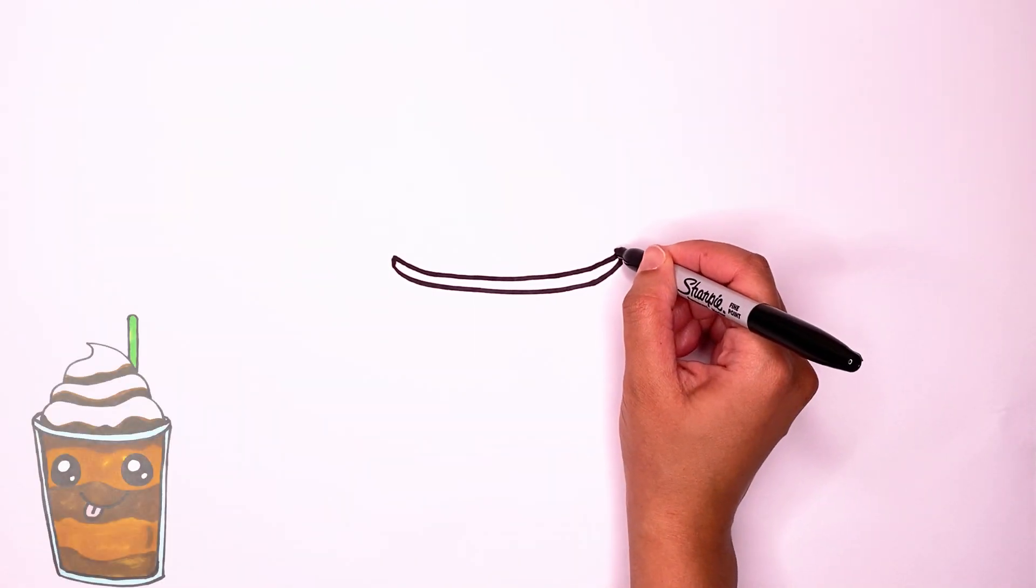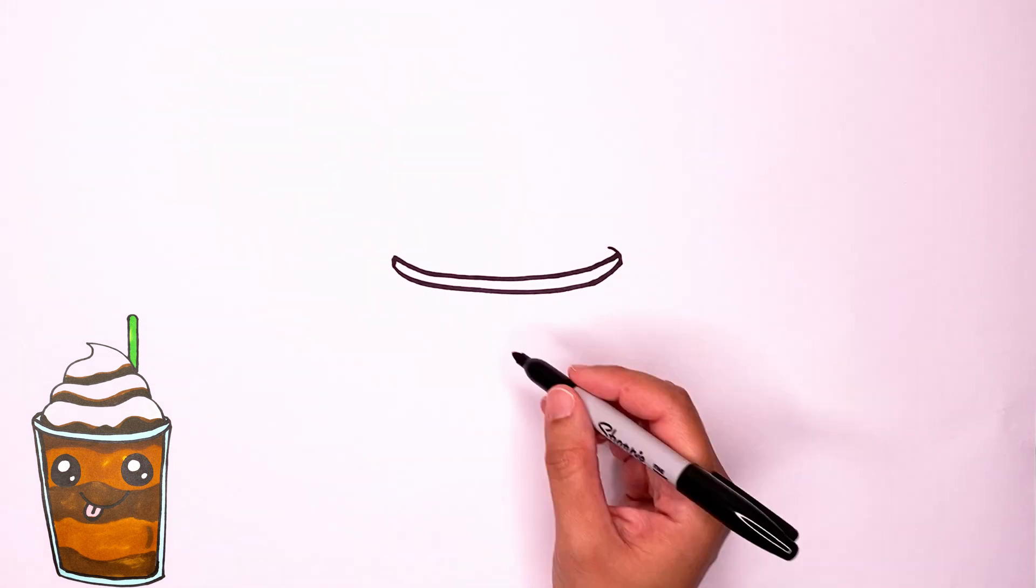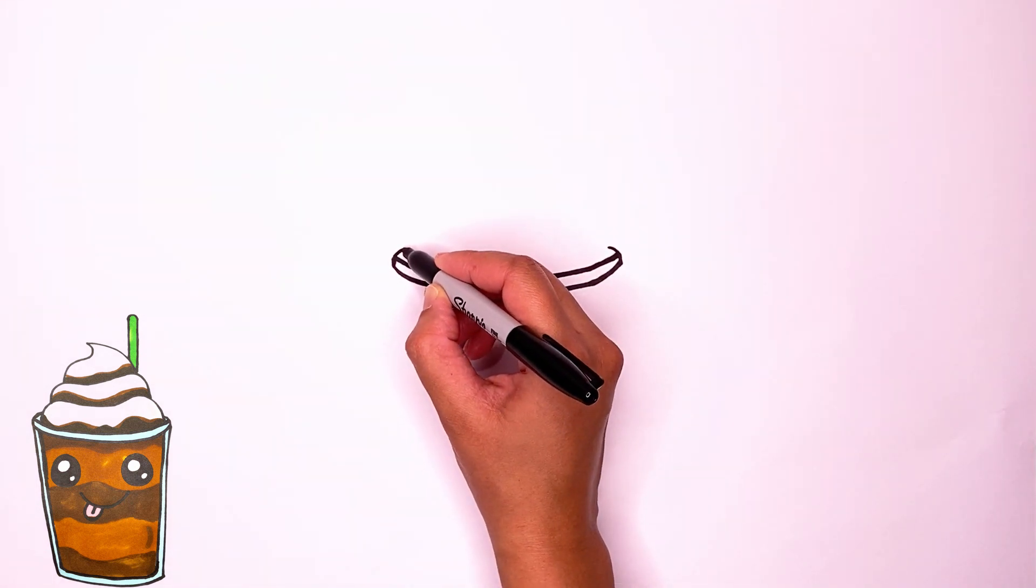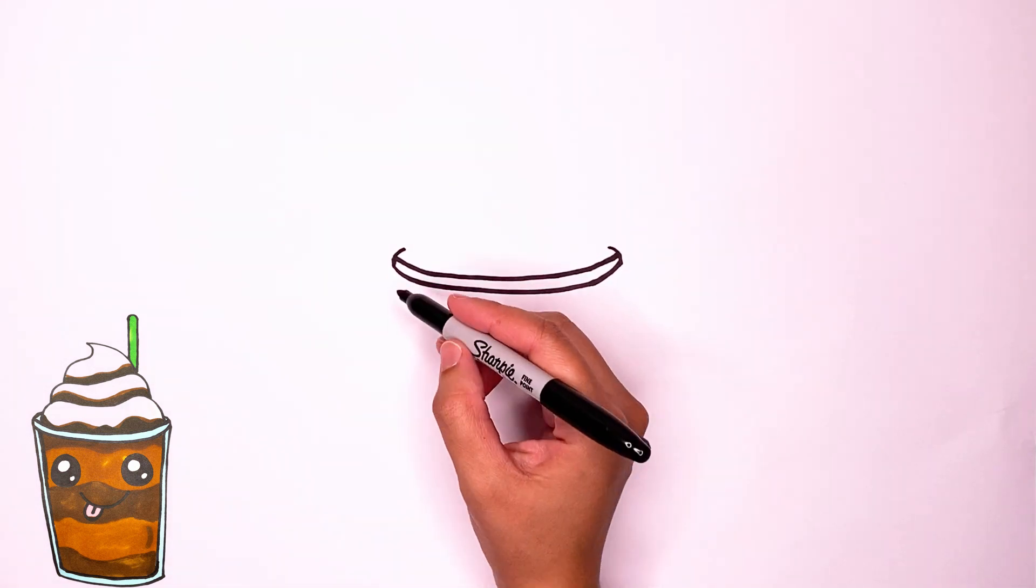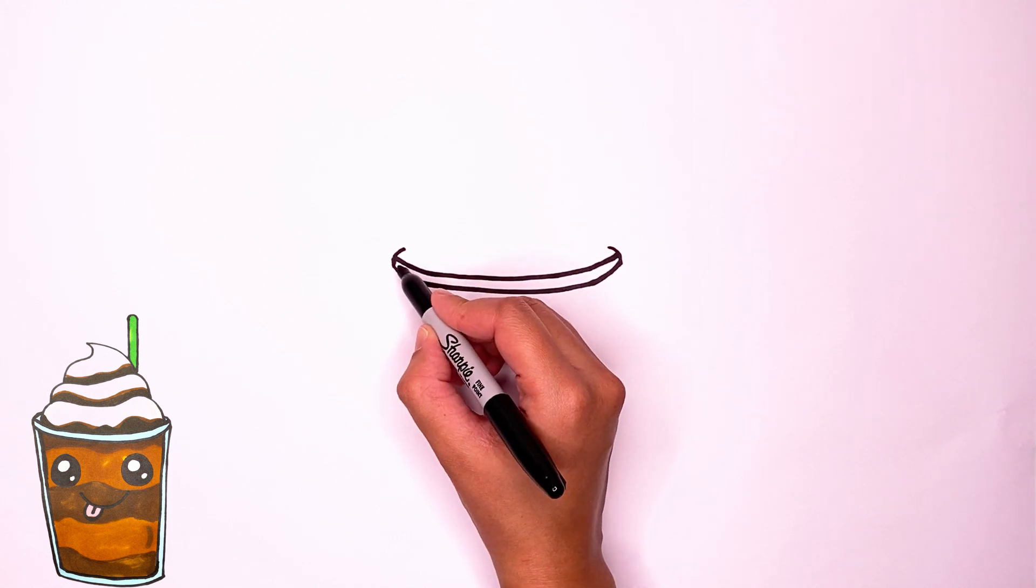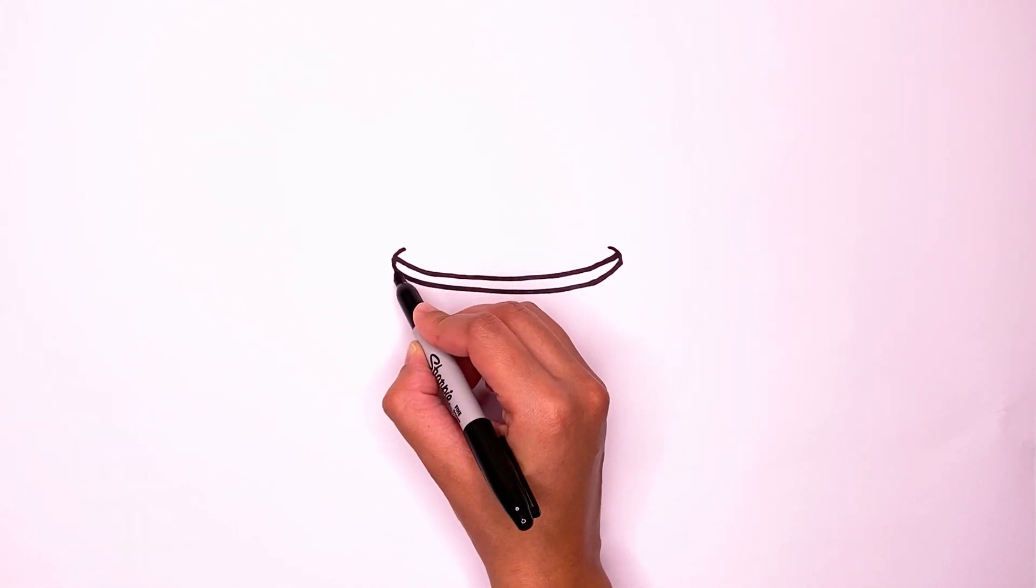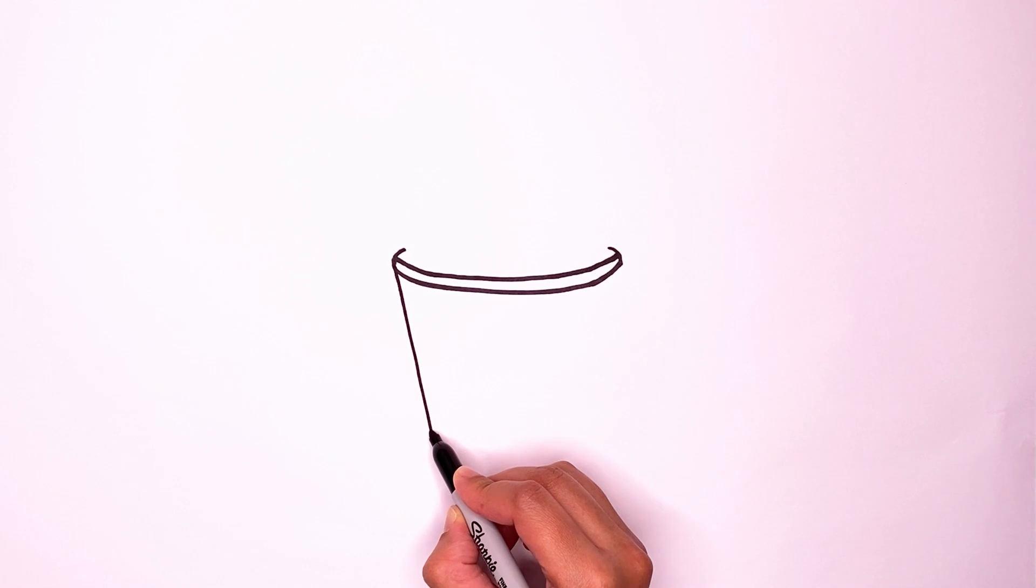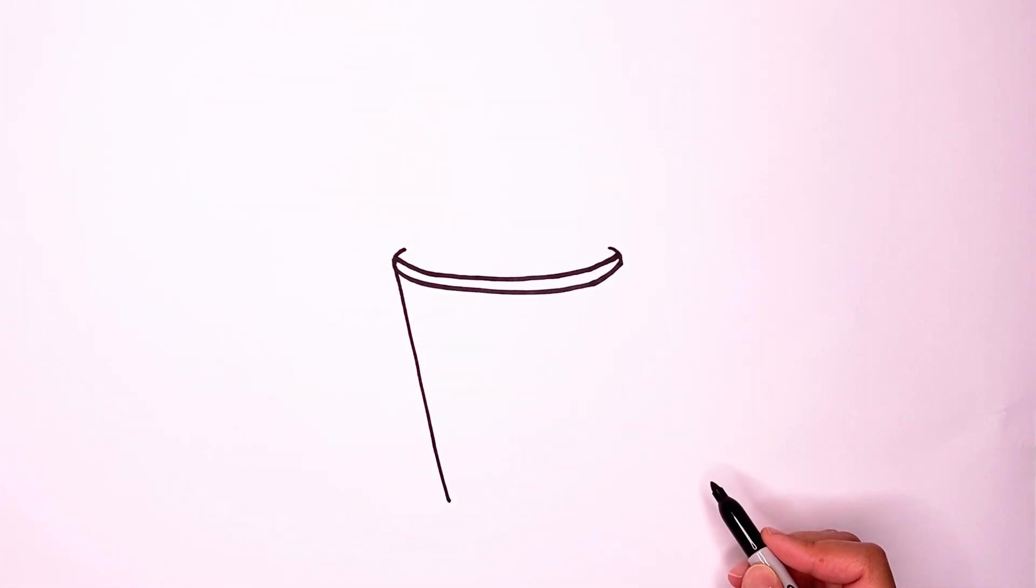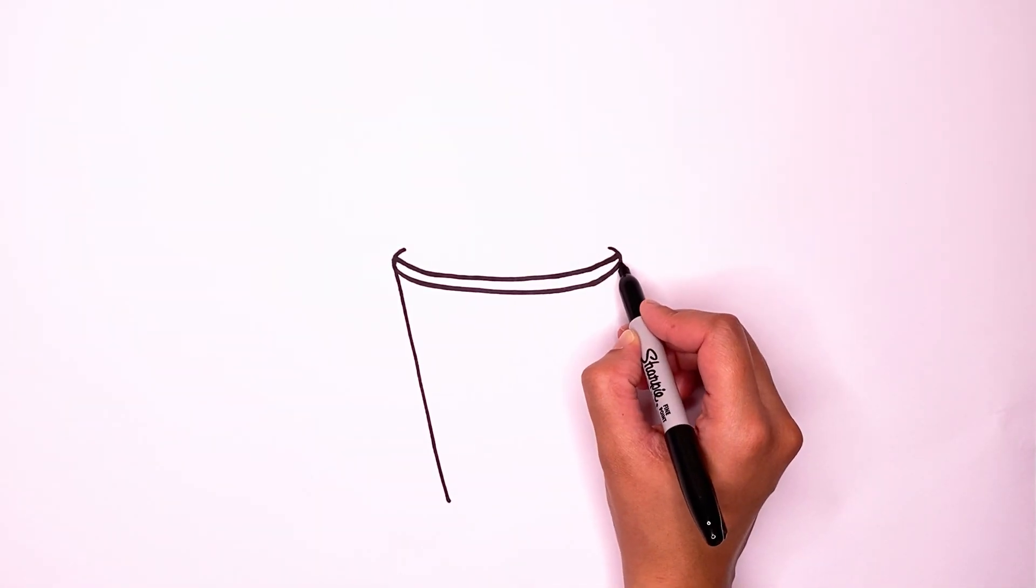Now we're going to draw a little curve in like that, and then a little curve in. Now we're going to draw a line that goes down and kind of in, just like this. Same thing on the other side.